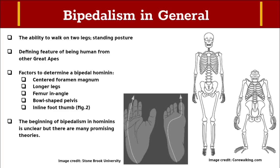Bipedality can also be identified through the feet. In apes, the big toe is diverged from the rest of the foot, acting like another hand and proving crucial for arboreal behavior. In humans, the big toe is in line with the rest of the foot and acts as additional leverage for walking upright. These factors can be identified by paleoanthropologists to determine whether an early hominin is bipedal or not.